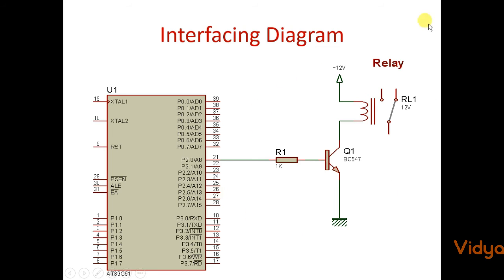So this is the interfacing diagram or circuit diagram for using relay with 8051 and using a transistor in between them for switching. Now see what happens if you give logic high on P2.0.